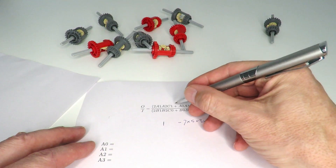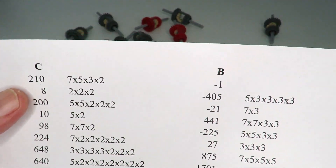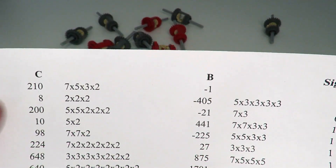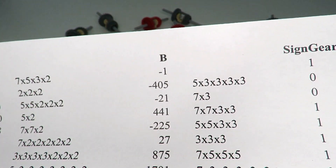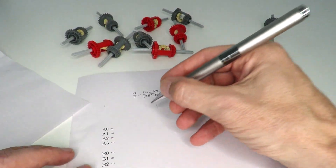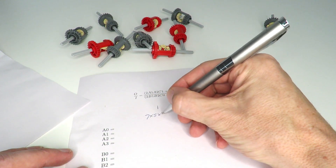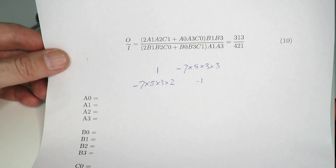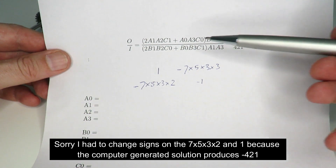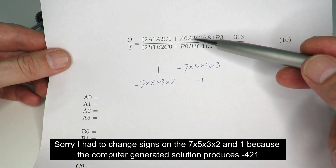This has to be negative because of the sign. For the 421 ratio, the top solution is C = 7 × 5 × 3 × 2 and B = −1. Reversing those signs, we've got 7 × 5 × 3 × 2 on one side and 1 on the other.